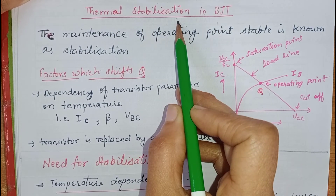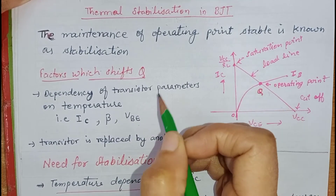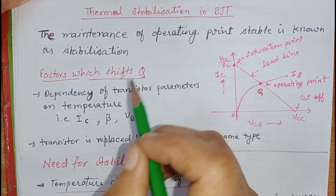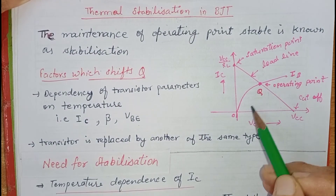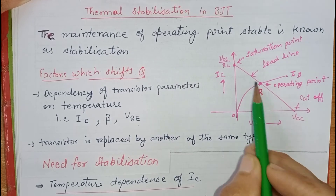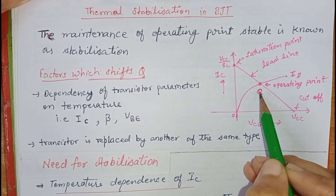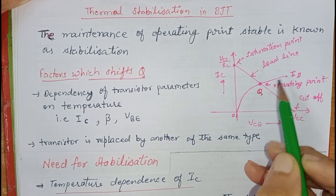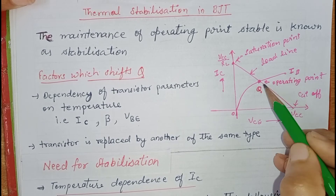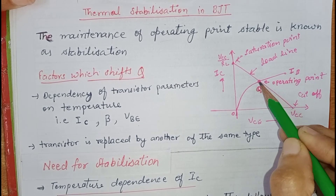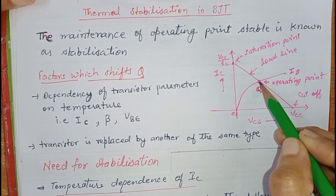First we should know what is stabilization. Stabilization is maintaining the operating point stable or fixed. The operating point is the intersection of output characteristics and DC load line. This is operating point Q, also called the quiescent point. Generally, for faithful amplification or distortion-less signal, it is fixed at the middle of the DC load line, so it must be fixed or stable for faithful amplification.